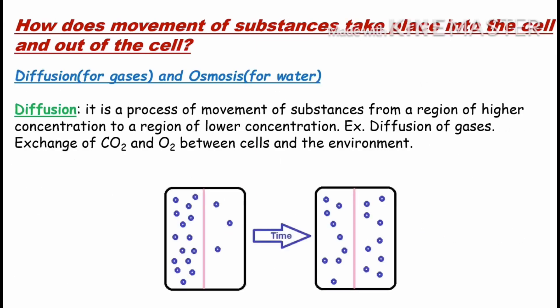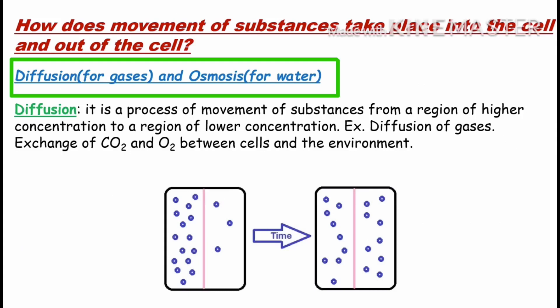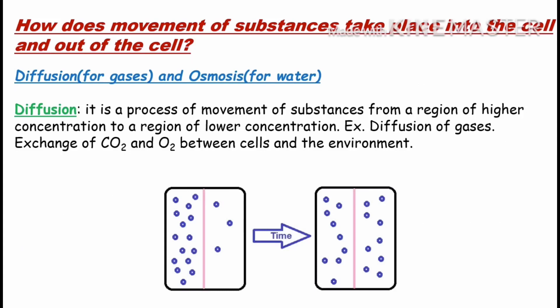How does movement of substance take place into the cell and out of the cell? Plasma membrane mein cell ke andar aur bahar cheezein aa ja sakti hain — lekin kaise? Inke liye processes hote hain: gases ke liye diffusion hai aur water ke liye osmosis hai. Pehle concentration ka matlab samajhna hoga. Concentration ka matlab hai ek given space mein us substance ka jitna amount present hai woh uska concentration hoga. Jaise do glass mein equal paani daala aur pehle glass mein ek chamach cheeni daali aur doosre mein teen chamach — toh doosre glass mein cheeni ka concentration zyada hoga.